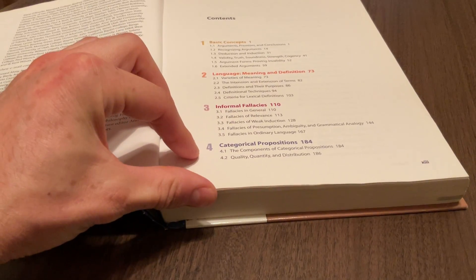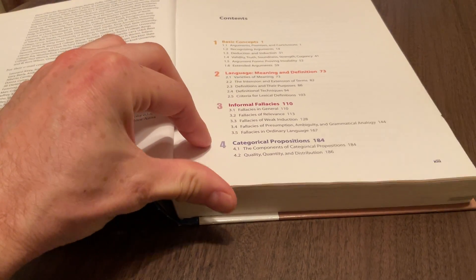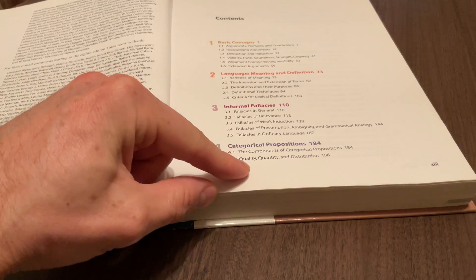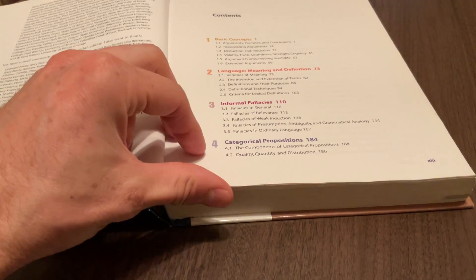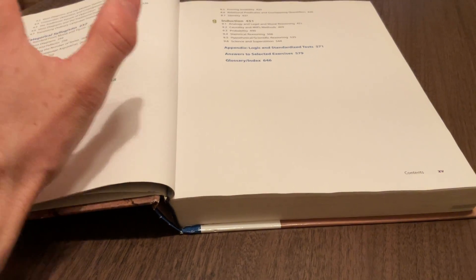Chapter four is on categorical propositions. We have the so-called A-E-I-O propositions. We'll think about quality, quantity, and distribution in such propositions, because you have a subject-predicate relationship.